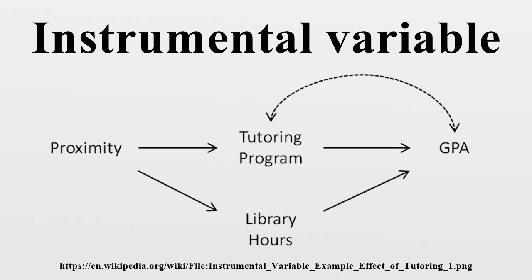Finally, suppose that library hours does not actually affect GPA because students who do not study in the library simply study elsewhere. As in figure 4, in this case controlling for library hours still opens a spurious path from proximity to GPA. However, if we do not control for library hours and remove it as a covariate, then proximity can again be used as an instrumental variable.